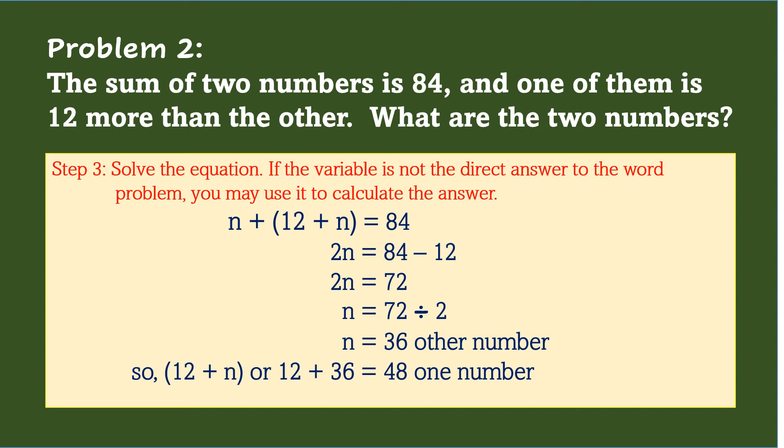Step 3 is to solve the equation. If the variable is not the direct answer to the word problem, you may use it to calculate the answer. Going back with the equation n plus 12 plus n equals 84. Combining the ns, you'll have 2n. Using transposition, you will move 12 on the other side of the equation while changing the operation. Thus, 2n equals 84 minus 12. Subtracting 12 from 84 will give you 72. And so, 2n equals 72. Transposing 2 on the other side is n equals 72 divided by 2, which will give the answer of 36.